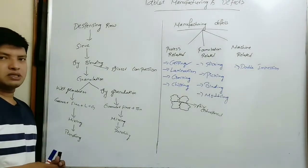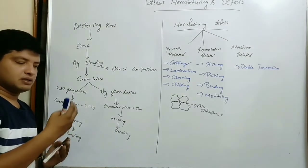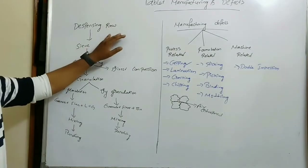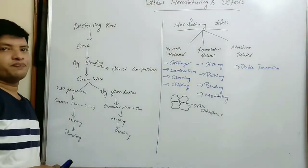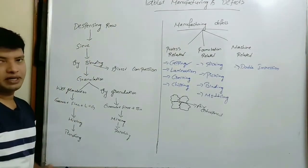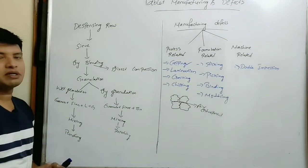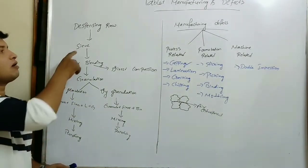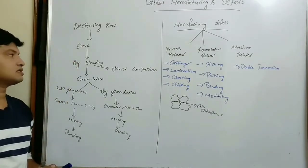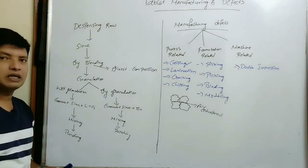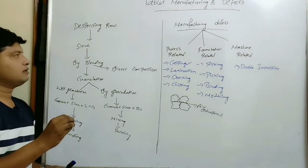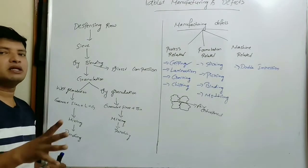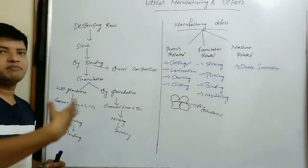In any process, whether a tablet or a capsule, dispensing of the raw material is the first process. We need to dispense the raw material and collect it as per the formula. Then we weigh the raw material, then we sieve it to get the required size or to avoid any lumps present in the raw material. Then we dry blend them — we blend the raw material according to the formula and mix them.